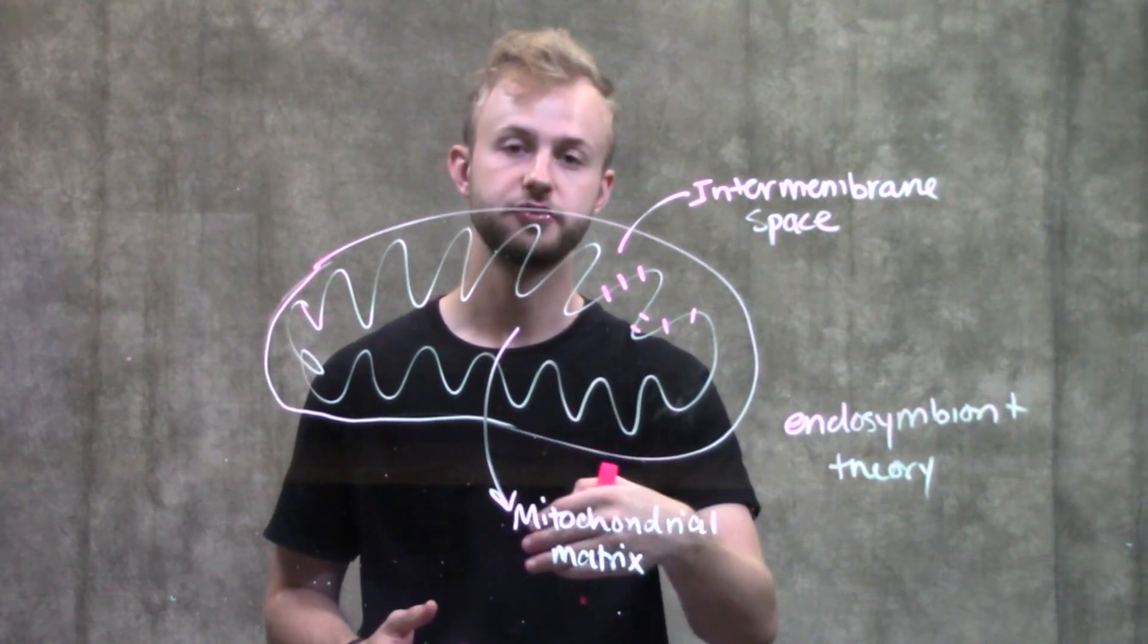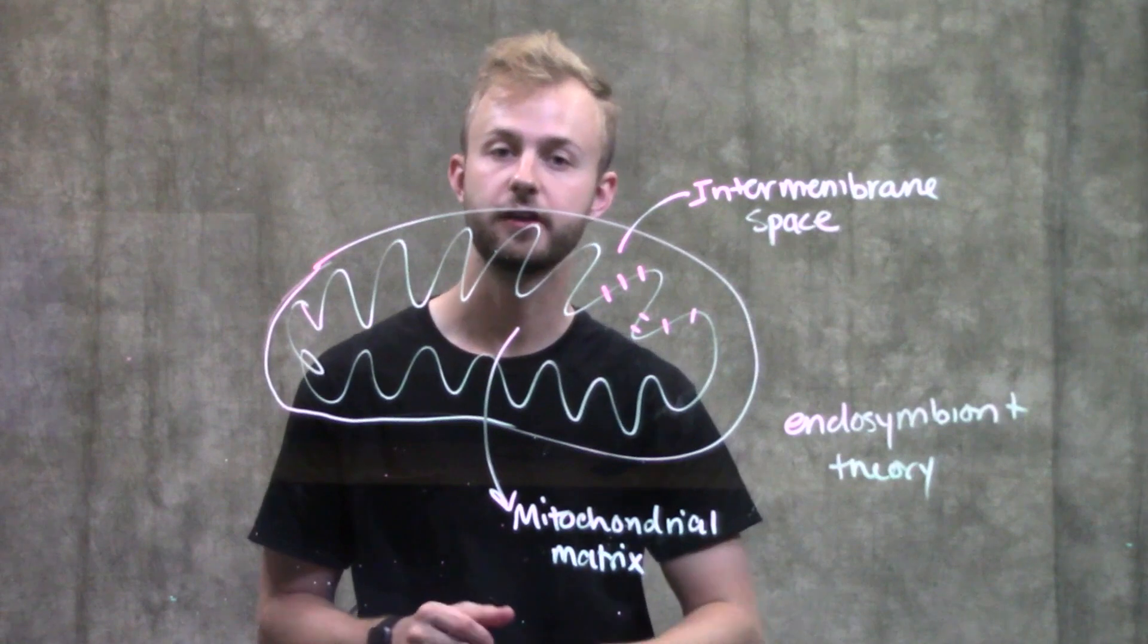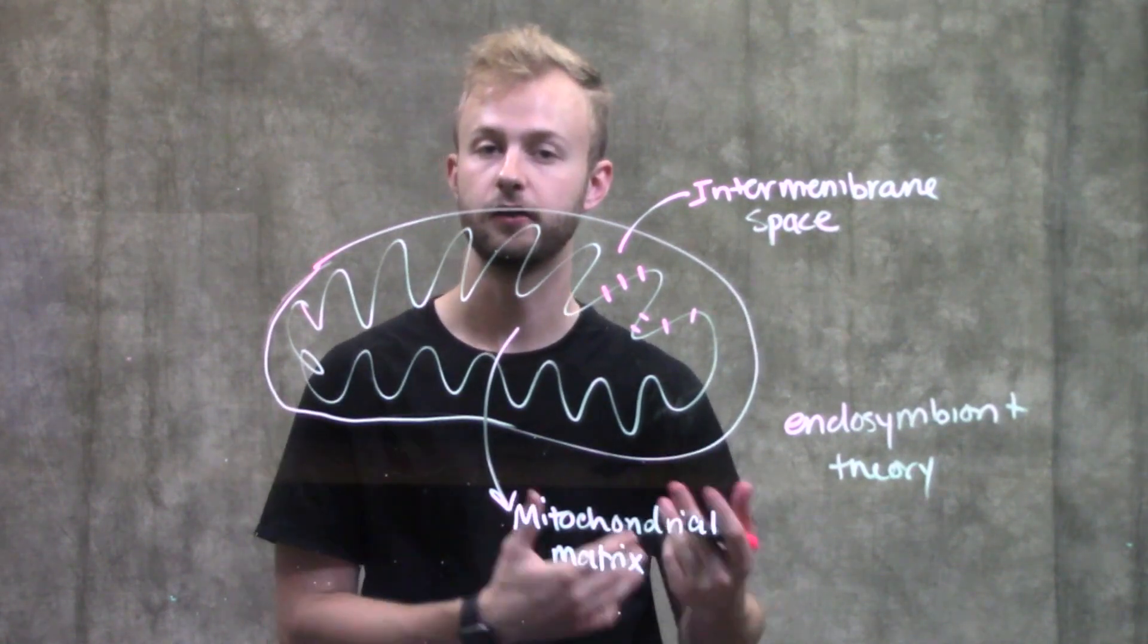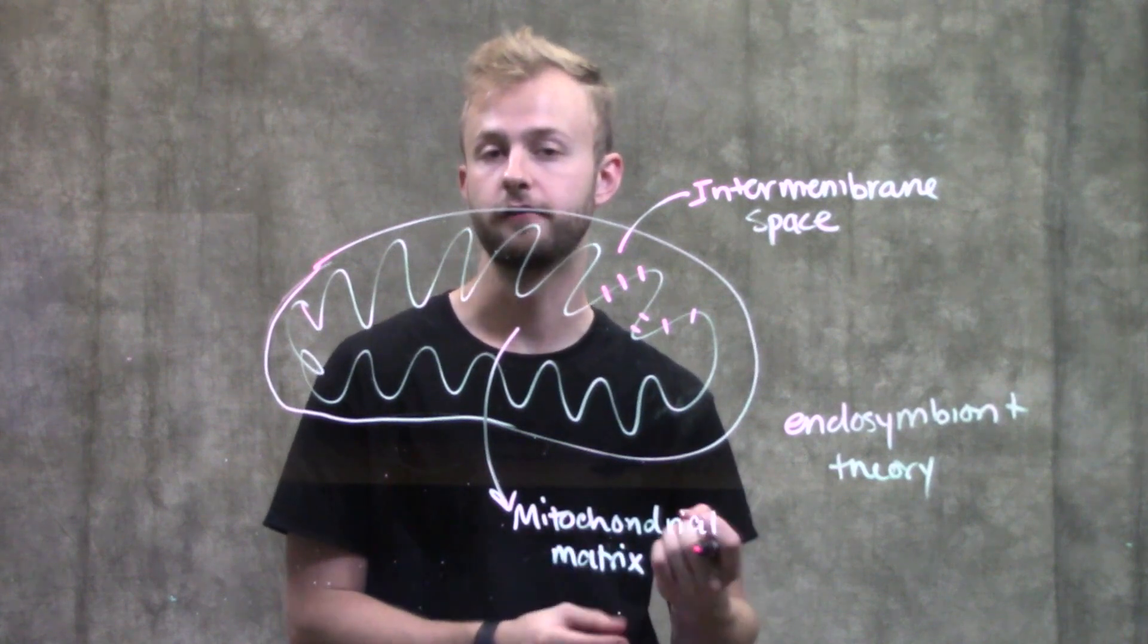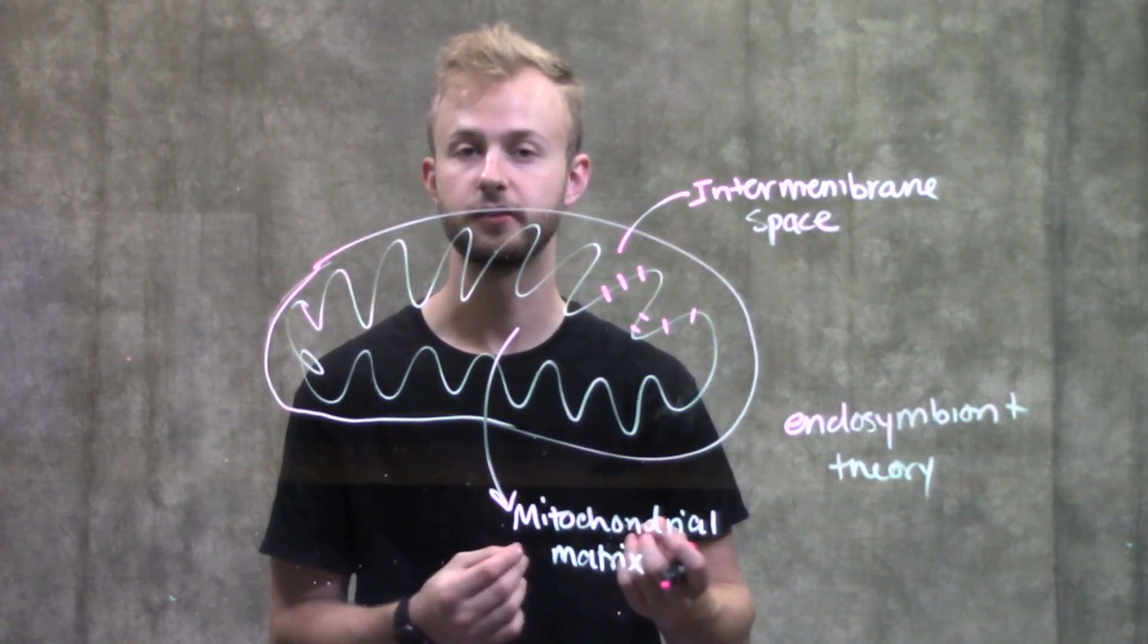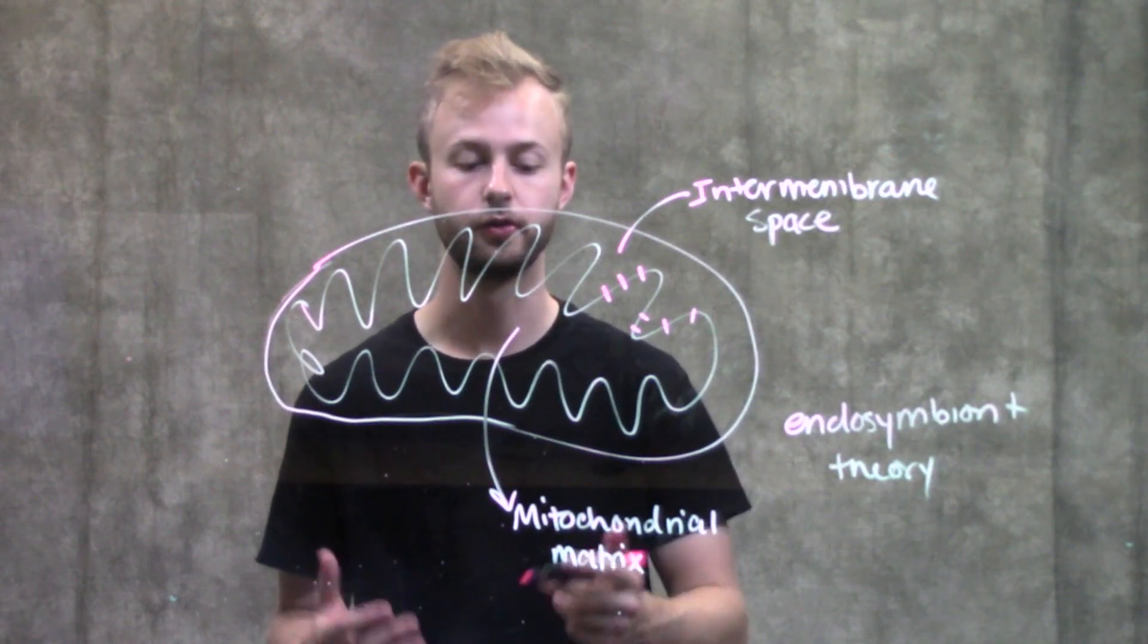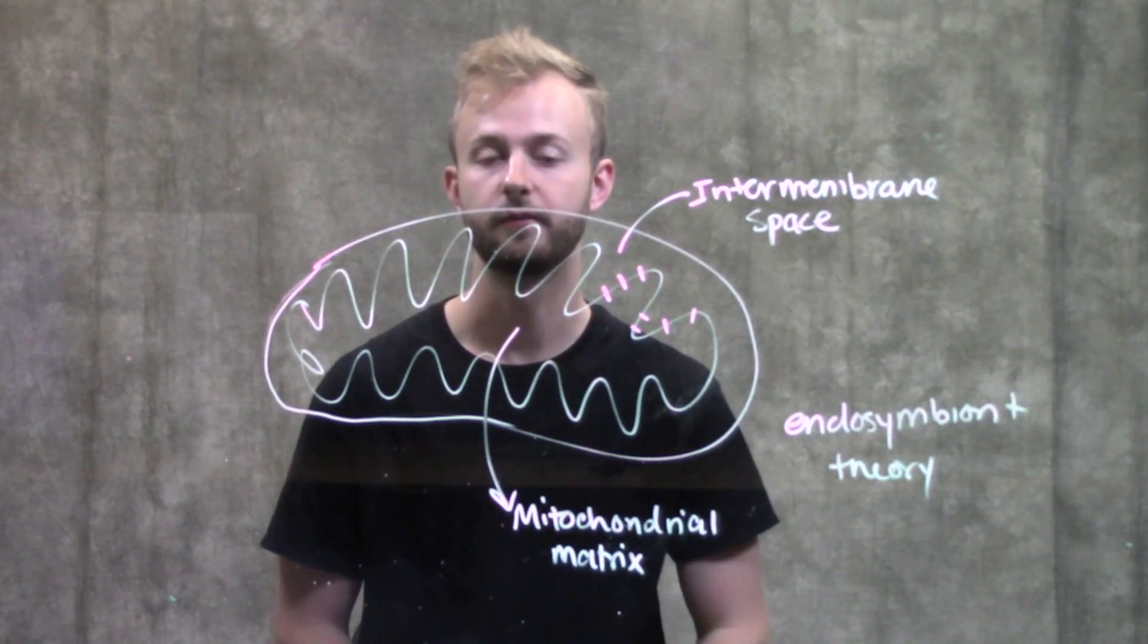We think that we have mitochondria because of the endosymbiont theory, which says that this once lived on its own but then was engulfed by a larger cell and was beneficial for both of those organisms to live in that configuration, so they stuck around and became permanent.